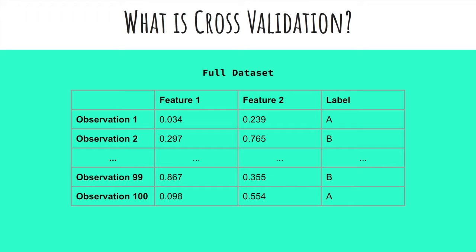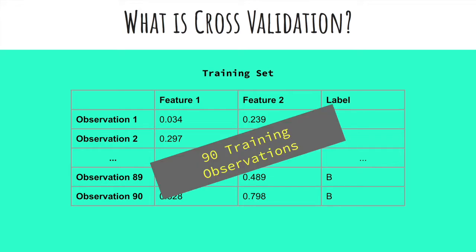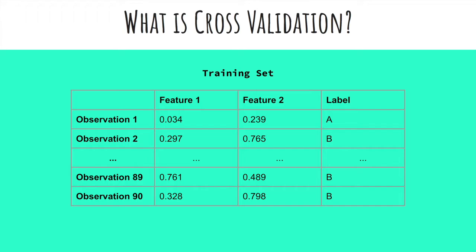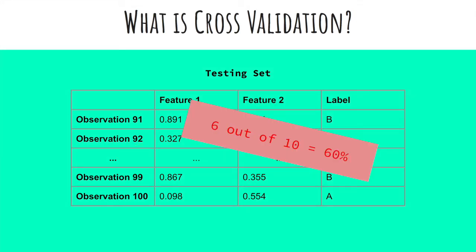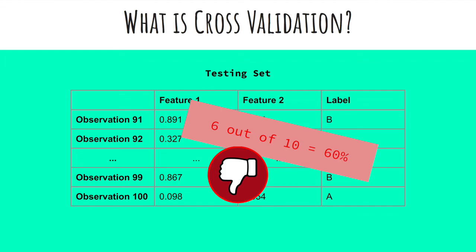So let's say I choose a 90-10 data split, as I am concerned with the model seeing enough data. From that standpoint it makes sense. However, we would only be left with 10 observations to test our model. With such a small number, it is not reasonable to gauge the effectiveness of our model. With one group of 10 test observations, our model may look very strong if we got 9 correct, representing 90% accuracy. But if we use a different 10 observations, maybe our model would have only gotten 6 right, returning an accuracy of 60%. There just isn't a big enough test set to make a fair assessment.